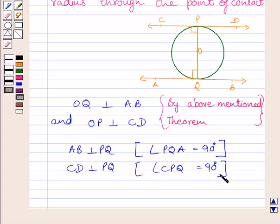Now these two lines are perpendicular to same line that is PQ. So we get AB is parallel to CD.